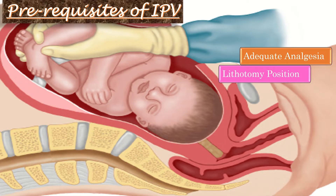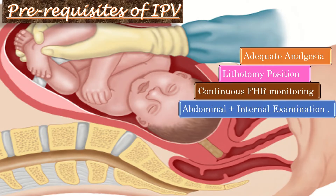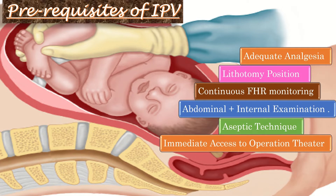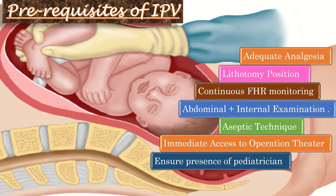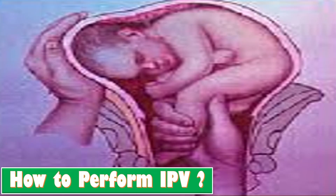What are the prerequisites of internal podalic version? These include adequate analgesia; the patient should be in lithotomy position; we should do continuous fetal heart rate monitoring; we should perform abdominal and internal examination to confirm the lie and position of fetal parts; we should maintain aseptic measures; we should have immediate access to the operation theater; and we should ensure the presence of the pediatrician.